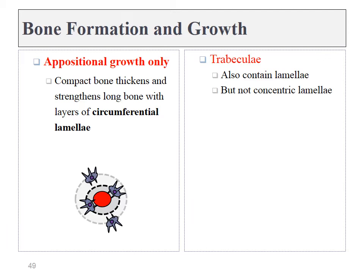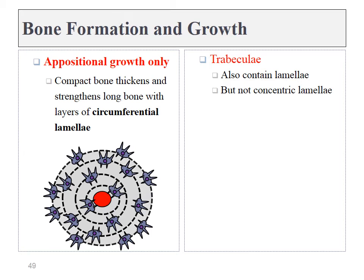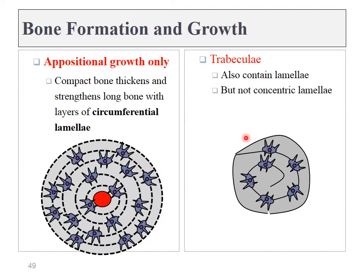Compact bone can only grow via appositional growth — adding a layer upon another layer. There is a maximum diameter for an osteon because all nutrients come from the center and have to diffuse via the canaliculi to the outer edges. Therefore, if more bone tissue is needed, we have to start another osteon. The trabeculae also have layers similar to an osteon, but there is no central canal and the layers spiral outward. Osteocytes still live in lacunae connected to each other by canaliculi, but they get most of their nutrients from their outer edges.